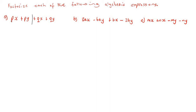In the first pair, the objective is to take out the highest common factor. Notice that p is common to both terms, so p is the highest common factor. We write p, then open a bracket. px divided by p leaves x, and py divided by p leaves y, so we get p(x + y).